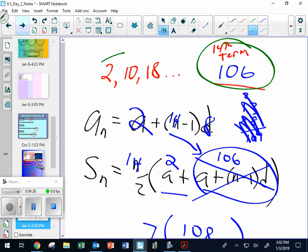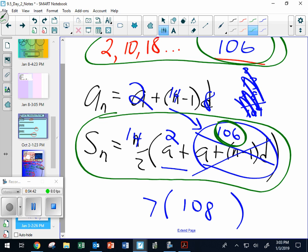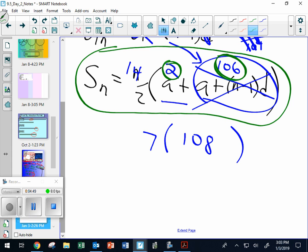So the 106 is our 14th term. Now we're adding up from 2 all the way up through the 14th term, which is 106. What do they all add up to? The final answer is I stick it into my sum formula, which is this one. The bigger number is here. The smaller number is here. When I add those together, I get 108. And 14 over 2 is 7. 7 times 108 is my final answer. 756 is my total.